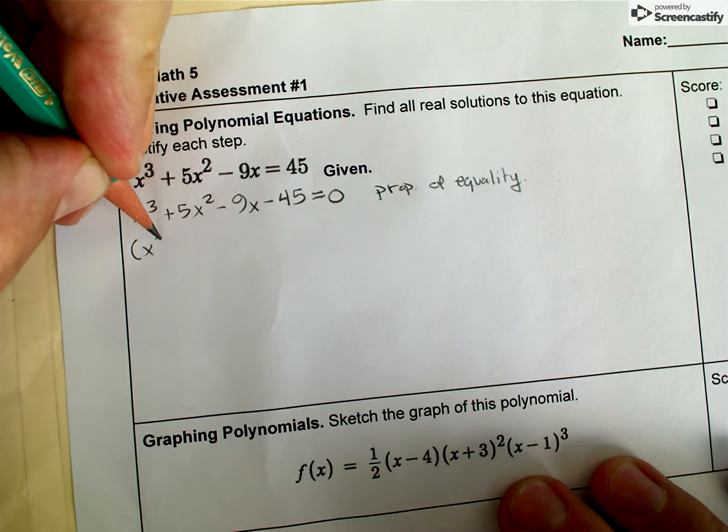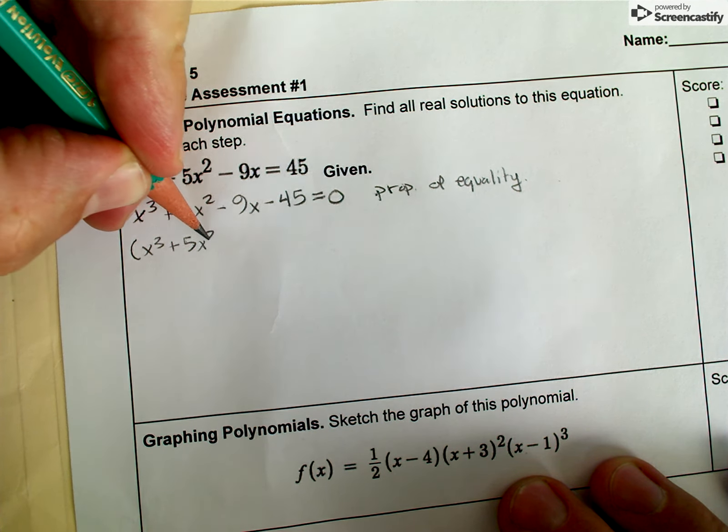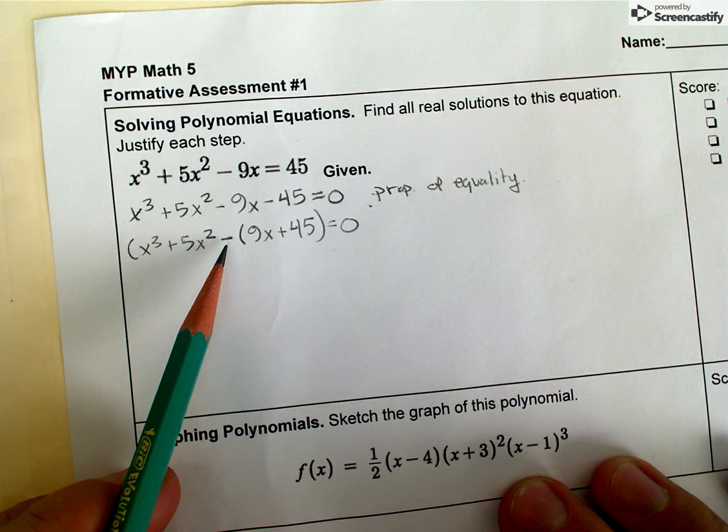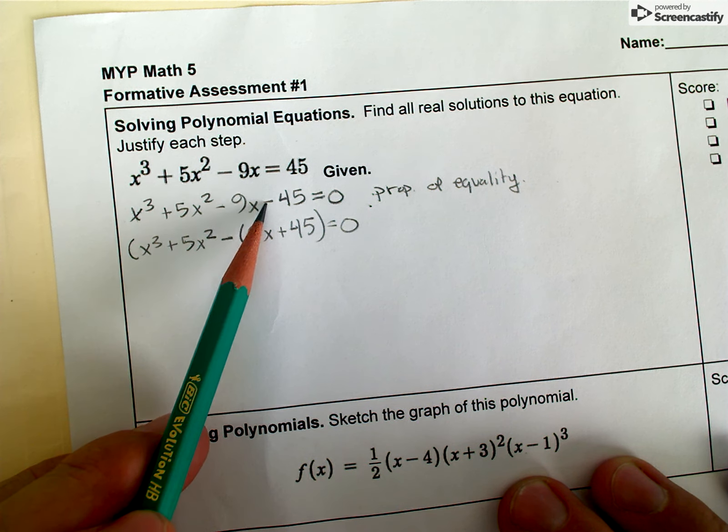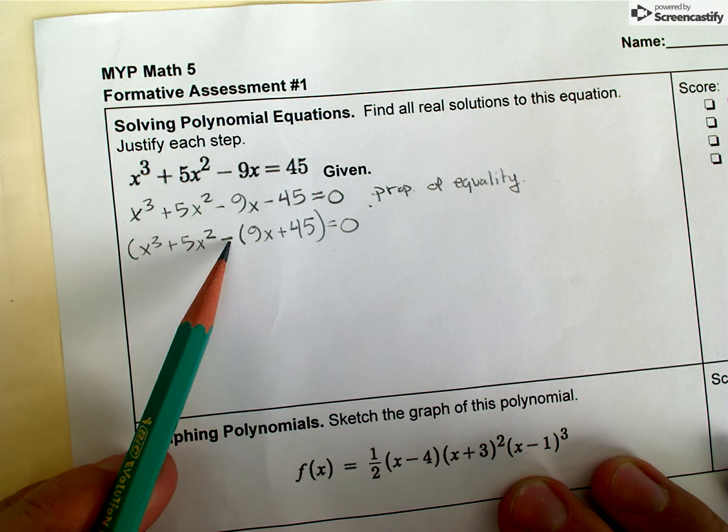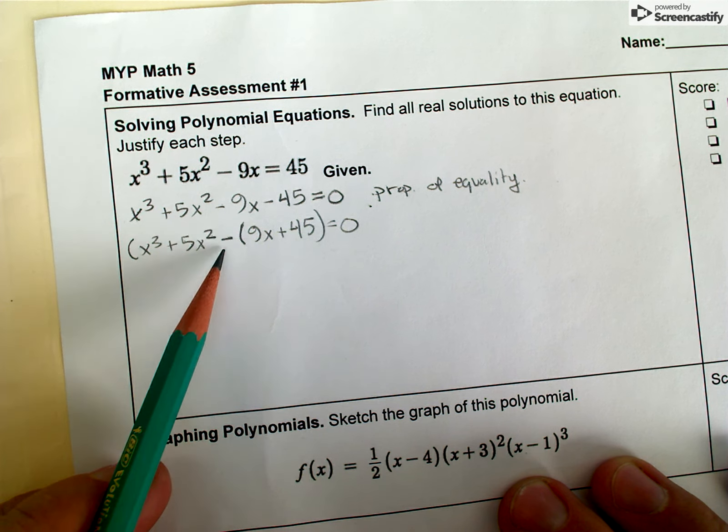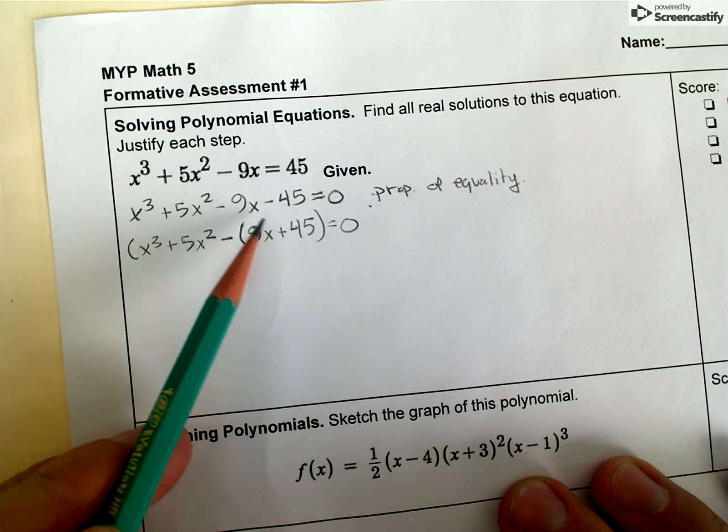You can already see that there seems to be some common factors among these terms - a 3 and a 3 and a 5 and a 5 and of course some x's. So I'm just gonna try to group these first terms together and then I'm gonna group the second two terms together, the last two terms.